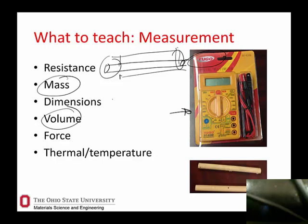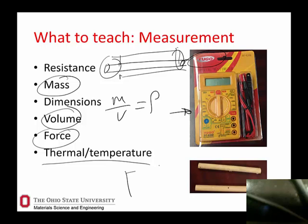You can measure mass, volume, and from that compute density — mass over volume. You can measure dimensions, force, and temperature using a FLIR camera. A really nice simple experiment: hold your thumb on one of the two-inch blocks for about seven seconds, then use the FLIR camera to see how fast the thumbprint goes away. Materials that are highly thermally conductive will lose your thumbprint almost instantly, while things with low thermal conductivity will show that thumbprint persisting for a long time on the FLIR camera.